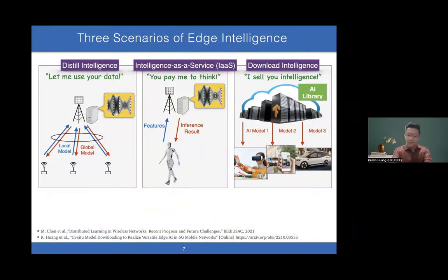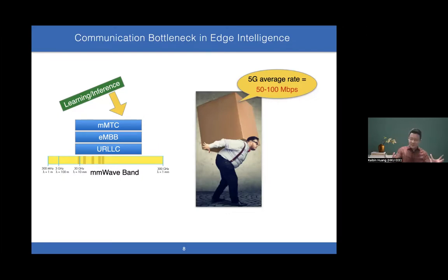All these services require transmission of high-dimensional data, stochastic gradients, and AI models, creating a communication bottleneck. I know KTH is world-leading in 6G terahertz research, but terahertz has limited range for short-range communication. Even millimeter wave or lower frequency bands are overloaded with different services: machine communication, mobile broadband, ultra-reliable low-latency communication. Now we're adding learning or inference. Even for 5G, average data rate is very low—50 or 100 megabits per second.